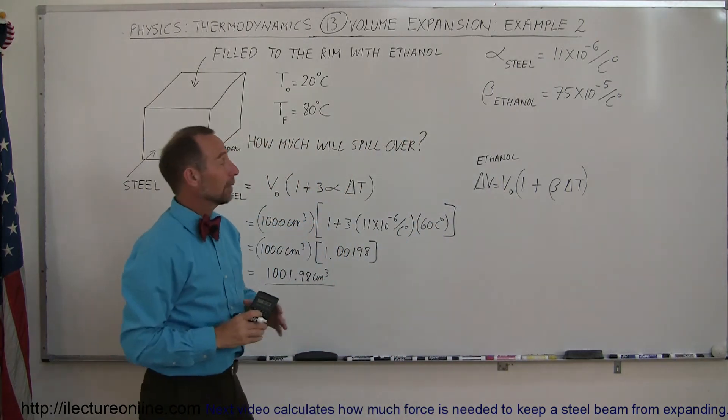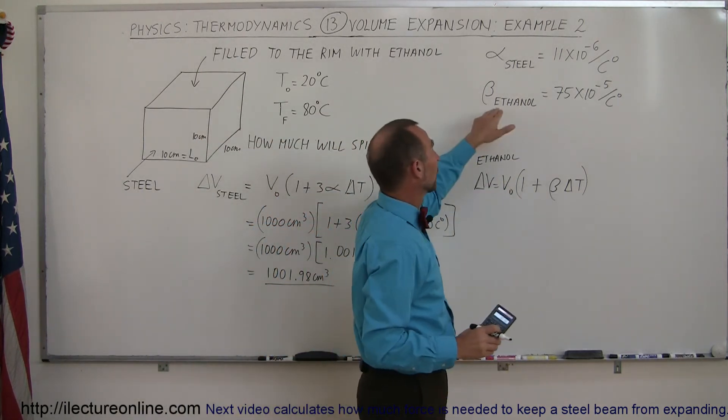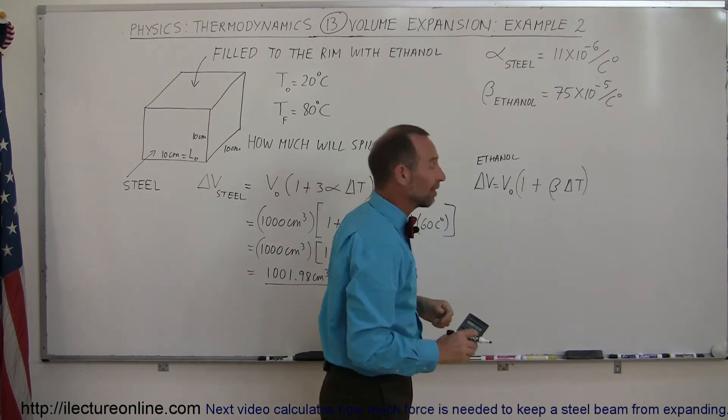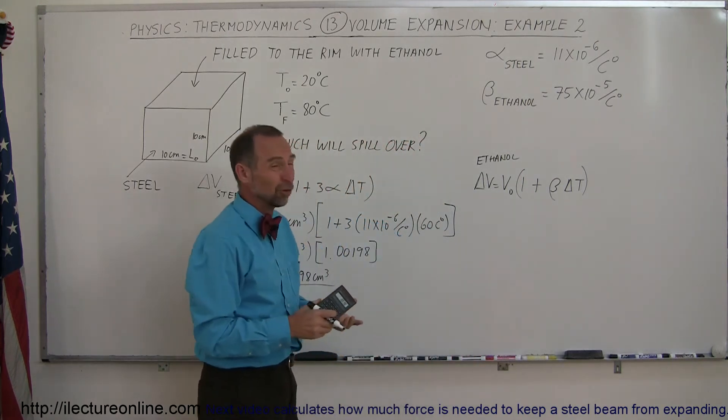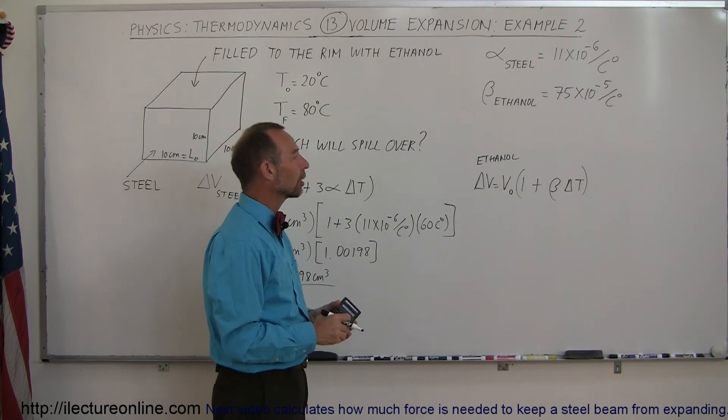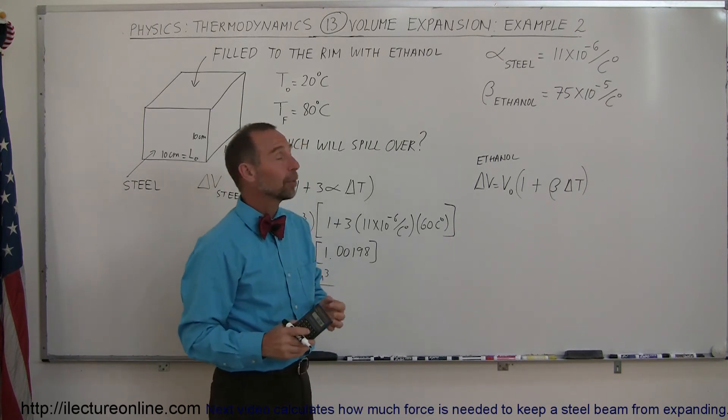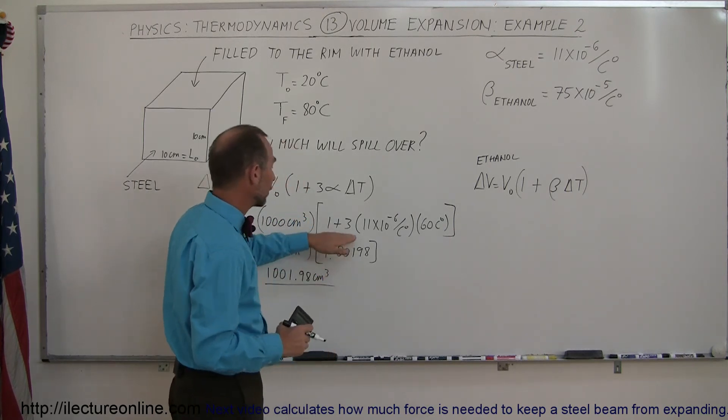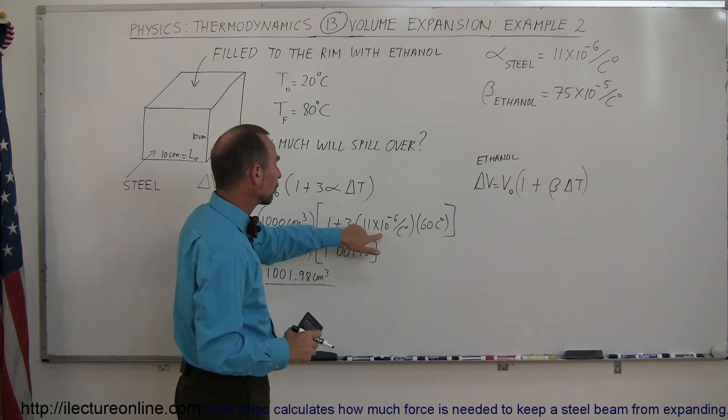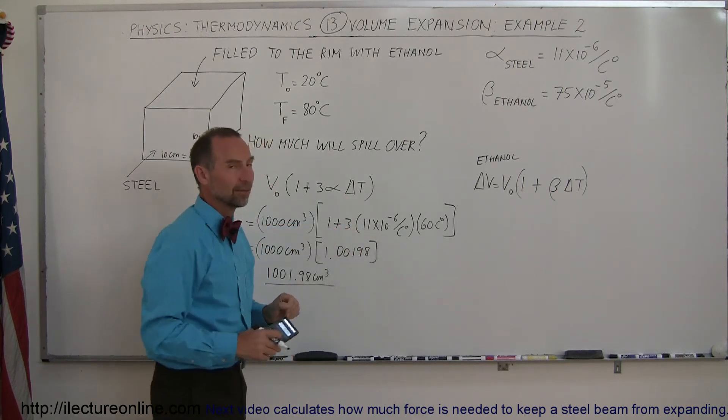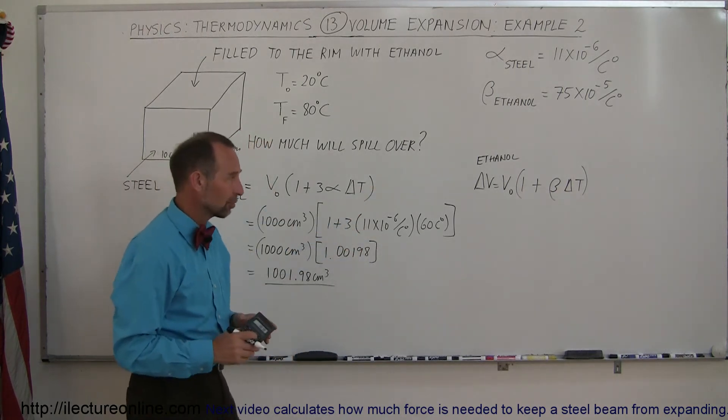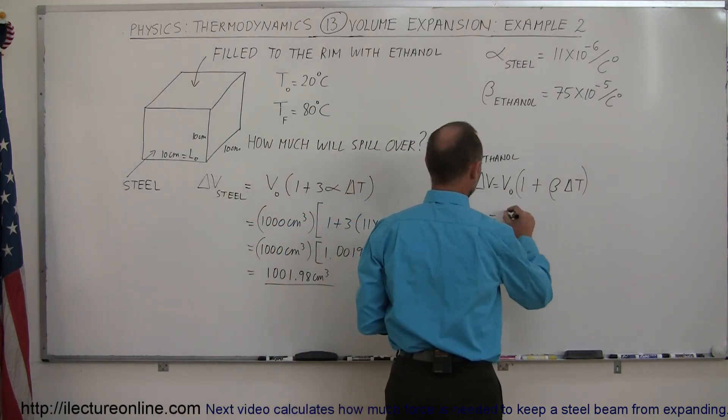Now what I did here is I used the volume coefficient of expansion instead of the linear coefficient of expansion because usually for liquids, they don't give you the linear, they only give you the volume. If, for example, we wanted to find the volume of steel like we did here, then we take the linear coefficient of expansion and multiply by 3. We don't have to do it in the equation over there. So the original volume, the same, 1,000 cubic centimeters.